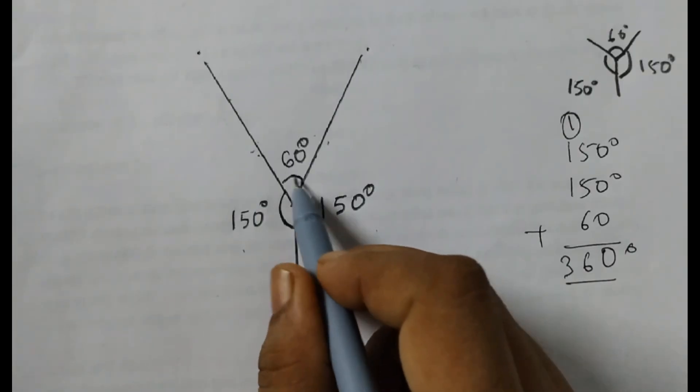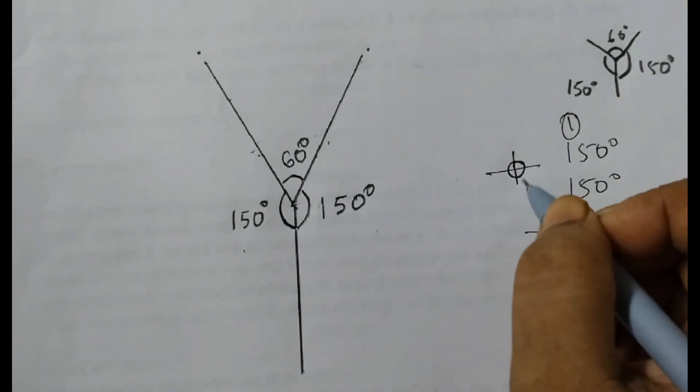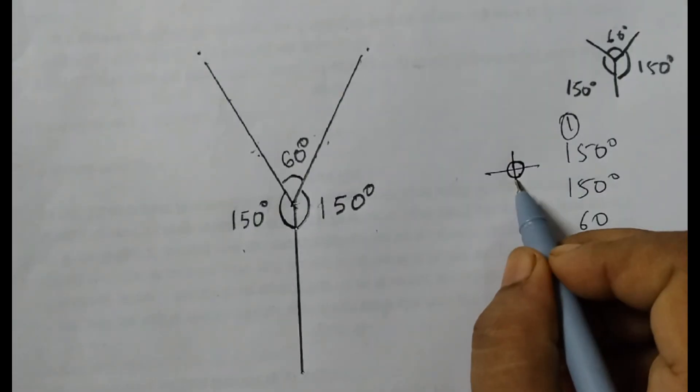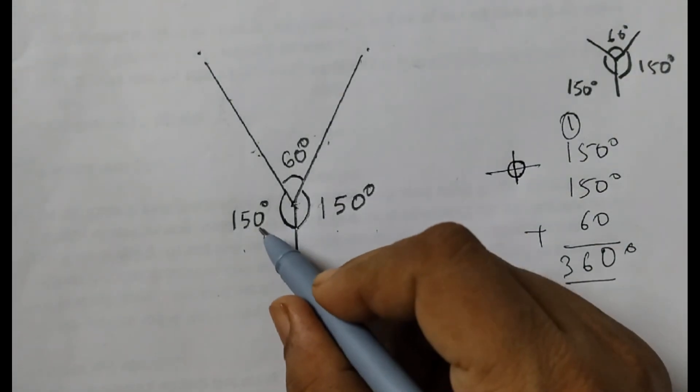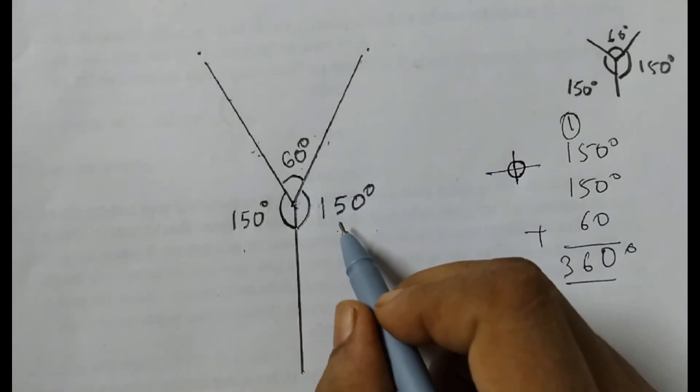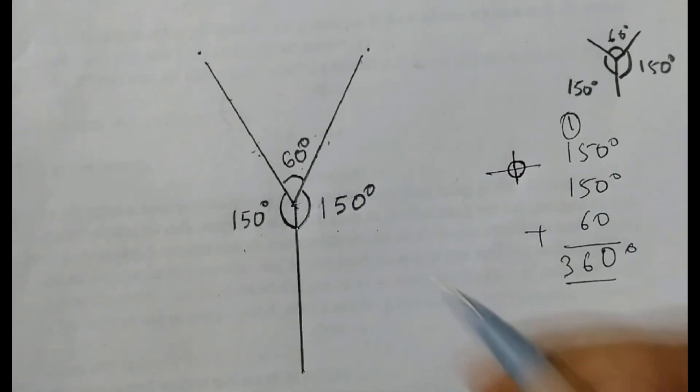This entire angle, this complete thing, this entire thing is 360 degrees. It is always 360 degrees. So that's the reason you just have to make any two angles. You can make this one and this one or you can make this one and this one, any two angles and the third one would be made automatically. With this we complete question number 5. See you all in the next video. Thank you.